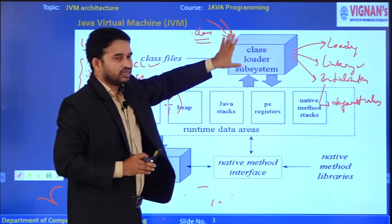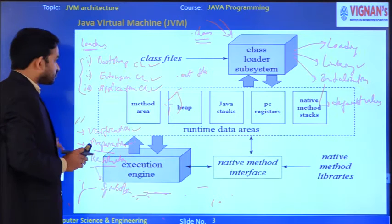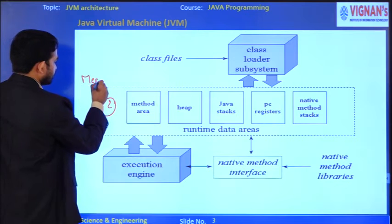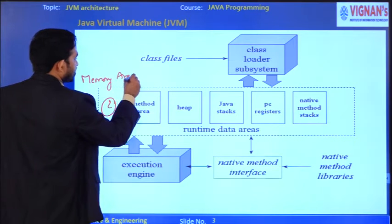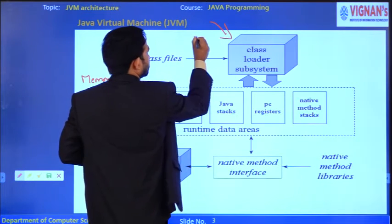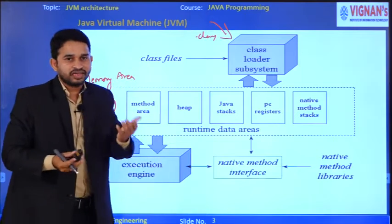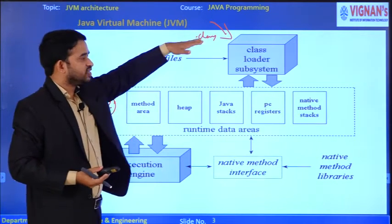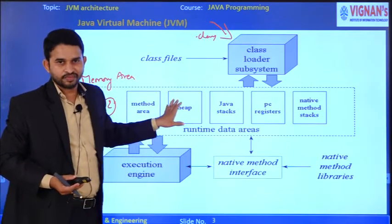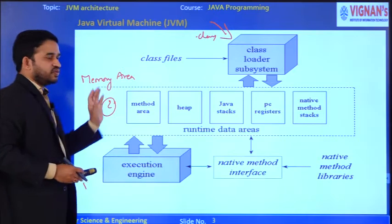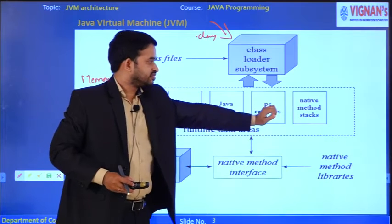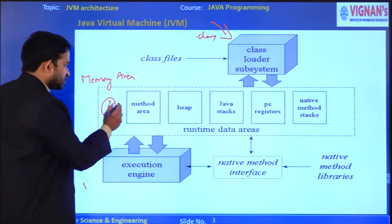The second part of JVM is the memory area. After the class loader subsystem loads the .class file, we need an area to store it. The memory area is divided into five parts: method area, heap area, Java stacks, PC registers, and native method stacks.